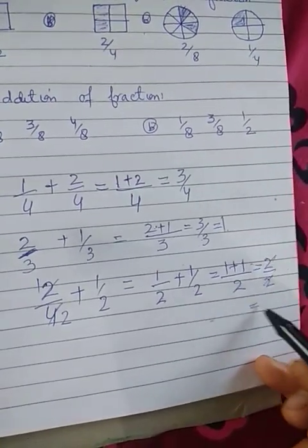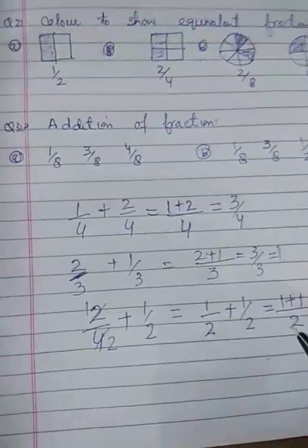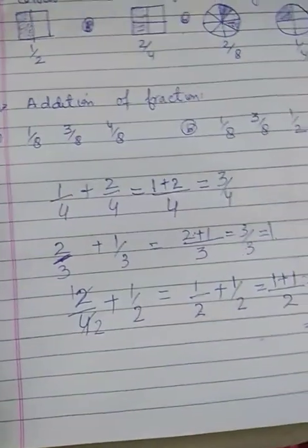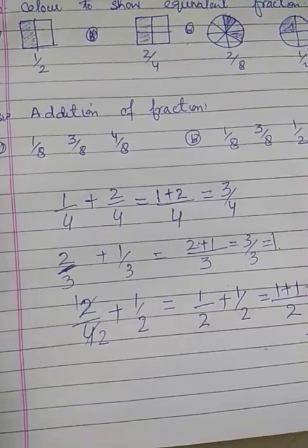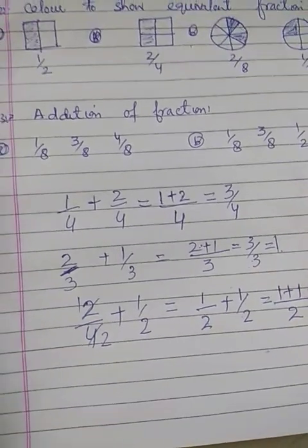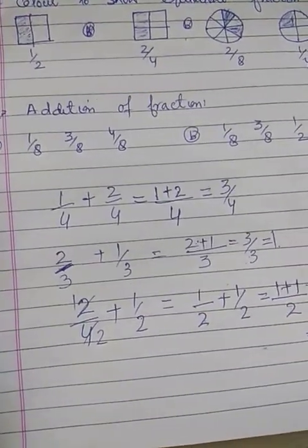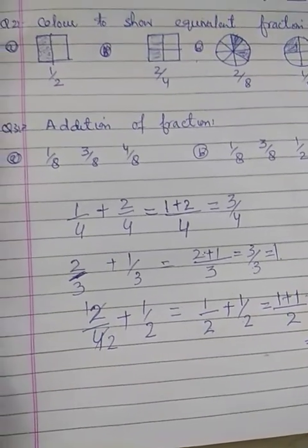When we add fractions with the same denominator, we keep the denominator the same and add only the numerators. That's the rule for adding fractions with equal denominators.